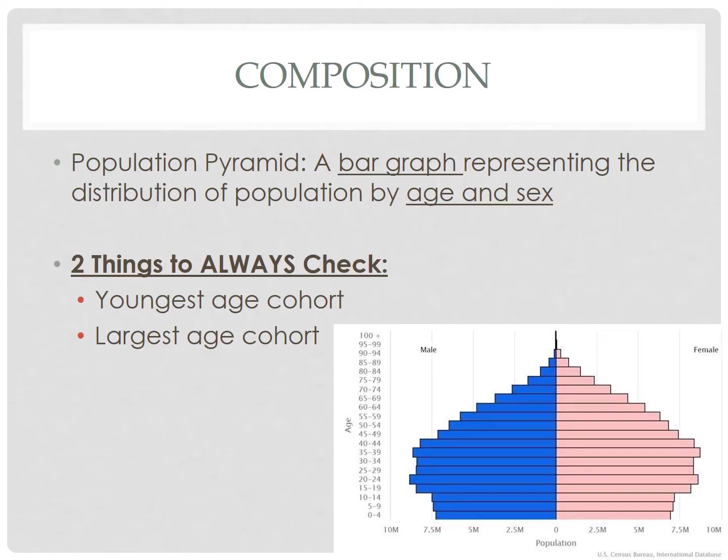It's worth noting that population pyramids at the country scale can disguise significant local variations, such as urban versus rural, as well as a number of other factors. So let's be critical and questioning — let's ask what would happen if I zoomed in to a specific part of this country? How would the population pyramid change?